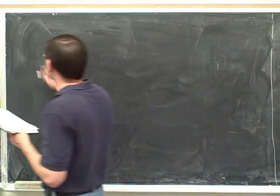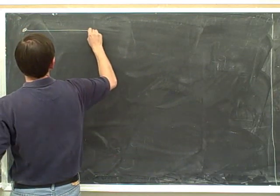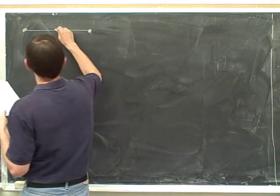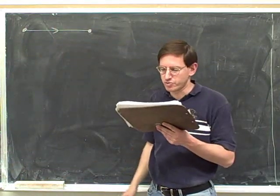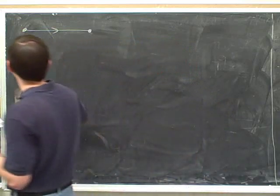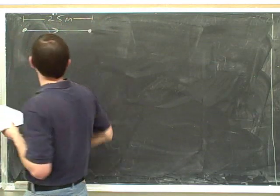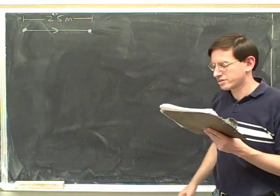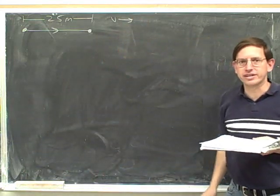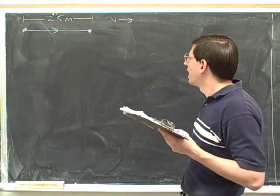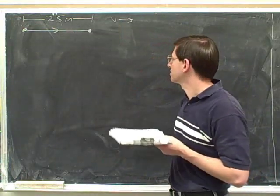First, we want to draw the path. Let's say we're moving to the right — they didn't tell us what direction, so we can say we're moving horizontally to the right, just to make things more concrete. Let's label this a little bit more. We can say this distance is 25 meters. We decided we're moving to the right, so that means our velocity is to the right.